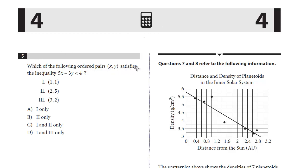Problem 5: which of the following ordered pairs (x, y) satisfies the inequality 5x minus 3y is less than 4? We have three ordered pairs. We can just use each ordered pair to test the inequality and see if it satisfies it. So Roman numeral 1, we've got (1, 1), x is 1 and y is 1. So 5 times 1 is 5, minus 3 times 1 is 3, is 2 less than 4. Yes, this works.